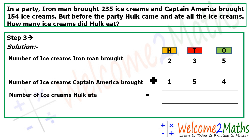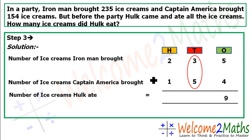Put together means we have to add the numbers. So we add 235 with 154, starting from the ones place. 5 plus 4 equals 9. Then 3 plus 5 equals 8. Then the hundreds place: 2 plus 1 equals 3. So Hulk ate 389 ice creams.